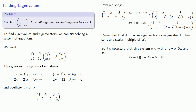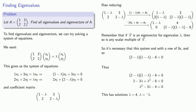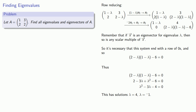It's therefore necessary that the expression (2 minus lambda)(1 minus lambda) minus 6 equals zero. Solving that equation, we find solutions lambda equals 4 and lambda equals negative 1, giving us two eigenvalues.